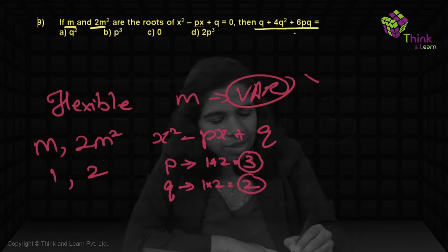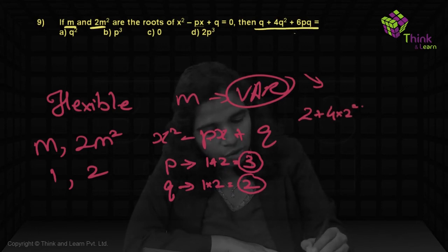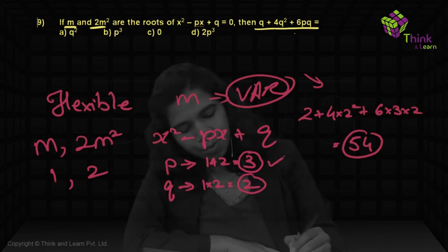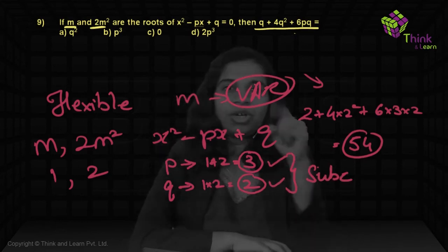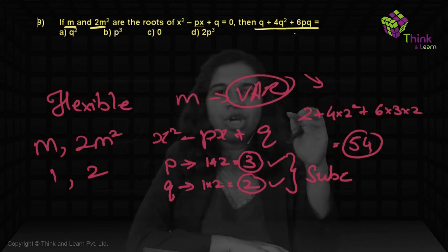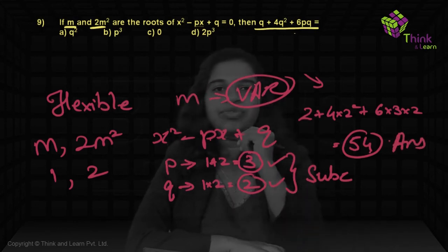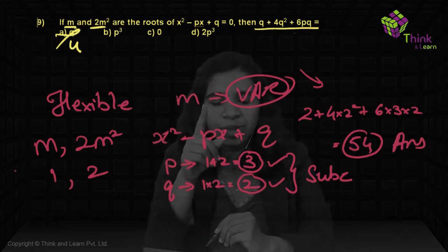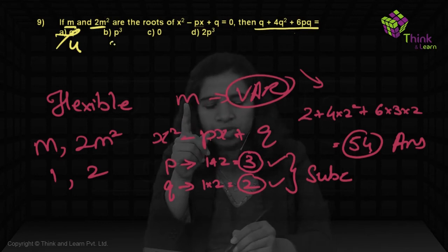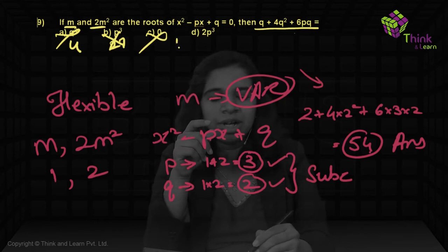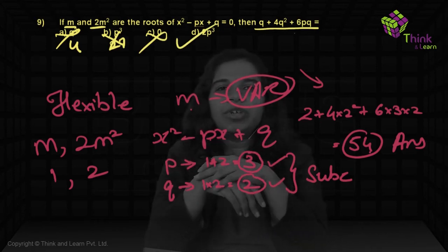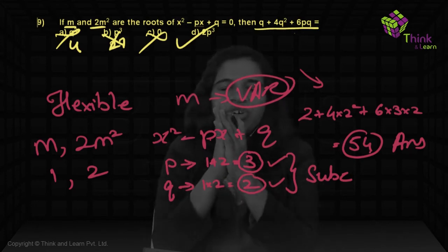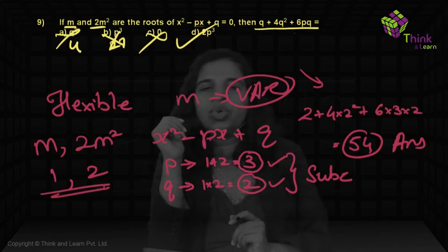The question asks for q + 4q² + 6pq. Substituting q = 2, p = 3: 2 + 4(4) + 6(3)(2) = 2 + 16 + 36 = 54. Now check the answer options with p = 3, q = 2: option A gives q² = 4, not 54; option B gives p³ = 27, not 54; option C gives 0; option D gives 2p³ = 2 × 27 = 54 — correct. That's how we solve all variable-based questions.